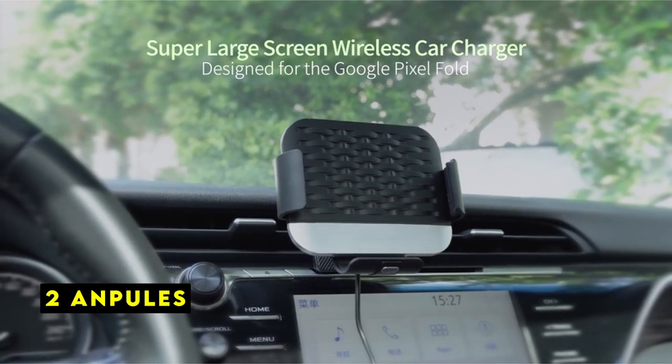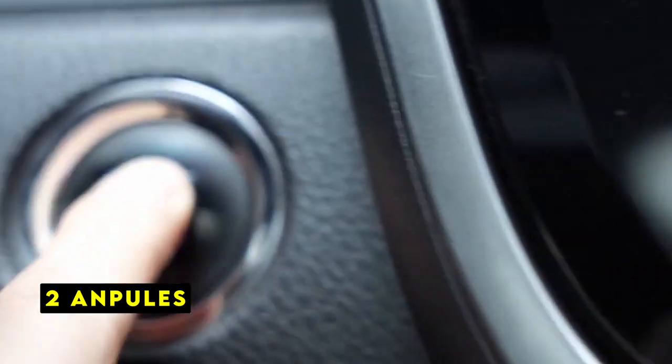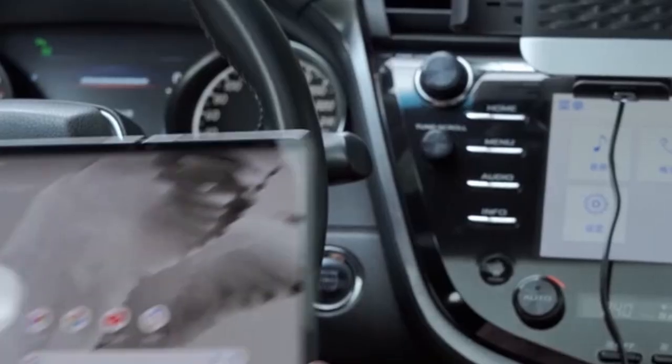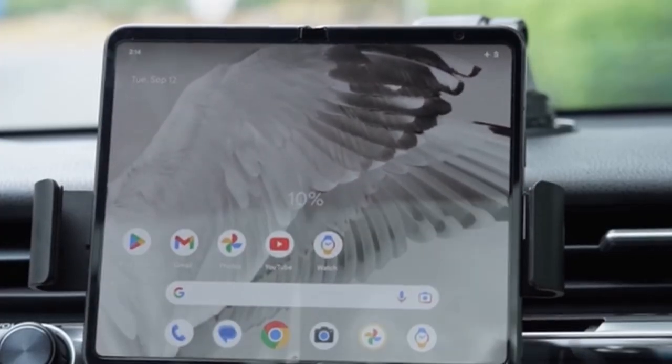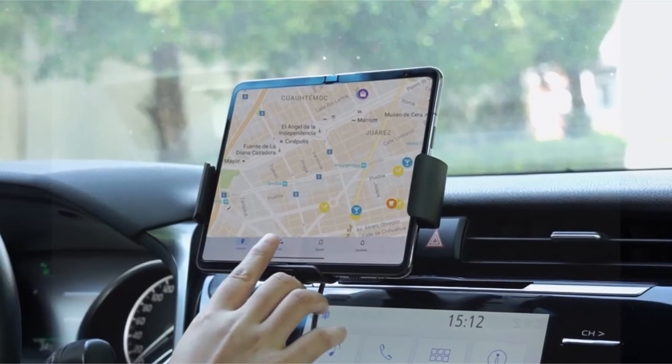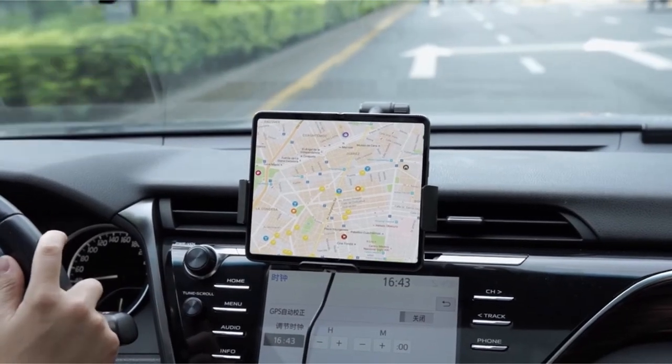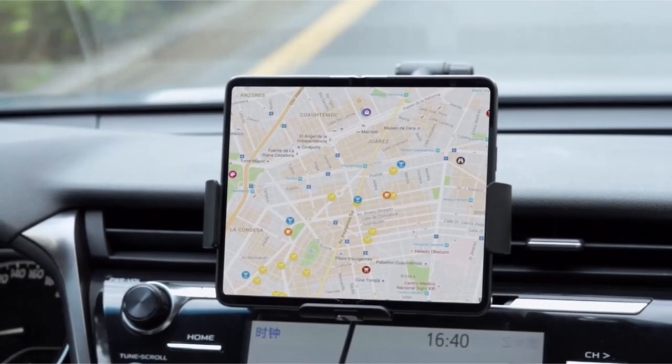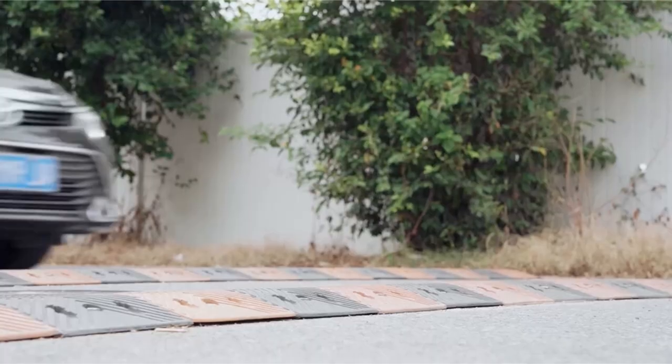At number 2 is Andabill's. The Andabill's wireless car charger offers a convenient and efficient way to keep your Google Pixel 9 Pro XL powered up while on the go. Its 15W fast charging ensures a quick boost to your battery, and the versatile mounting options provide flexibility for different driving conditions. The 360-degree rotation feature allows for optimal viewing angles, enhancing safety and convenience.